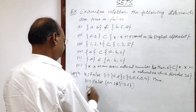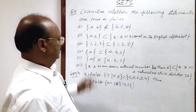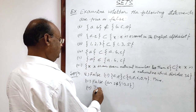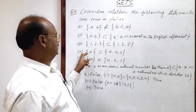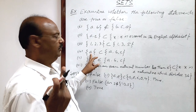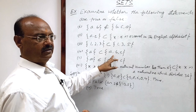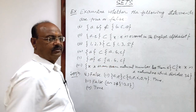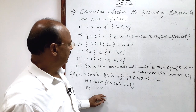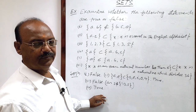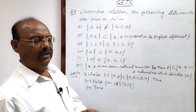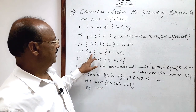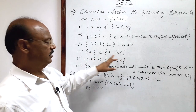Now let us see the fourth question. Whether this set is a subset of this set — definitely the statement is true, because each and every element of this set is also available in the right hand side set. By the definition of subset: set A is called a subset of set B if each and every element of set A is also available in set B. On that basis, element A is available here, so this set is a subset and the statement is true.